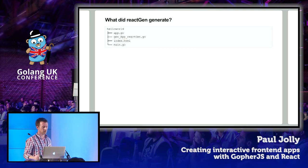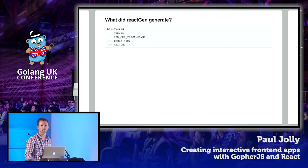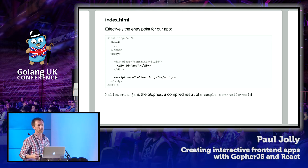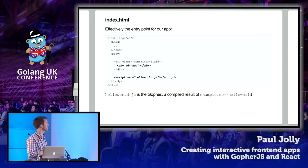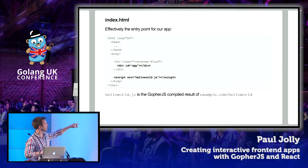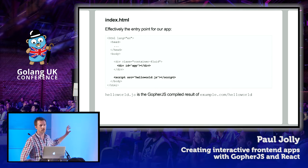So what did ReactGen in its init mode give us? It gave us four files — a couple of Go files, an index.html, and what looks like a generated Go file. An HTML file is effectively the entry point for our application — that's the thing that gets loaded by the browser. The script tag is one thing that's effectively a side effect, and hello world.js here is the compiled JavaScript result of those Go files. There's also a div in the middle identified by the app ID. This is just a boring HTML file that happens to load the GopherJS compiled JavaScript as a side effect.